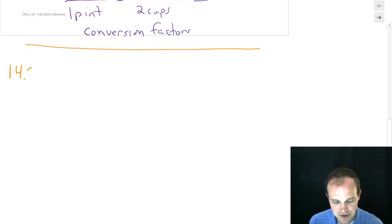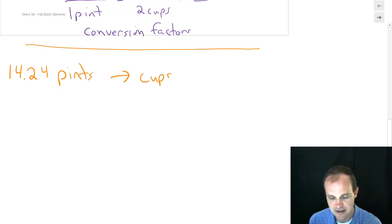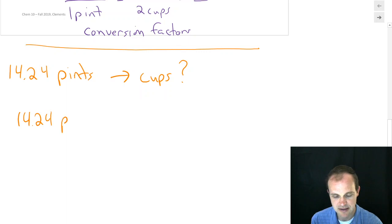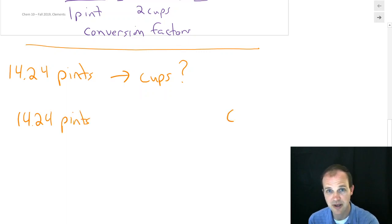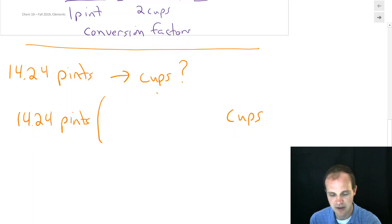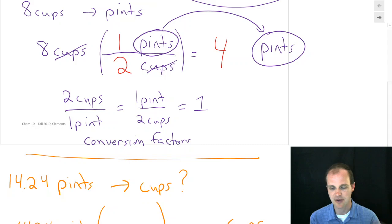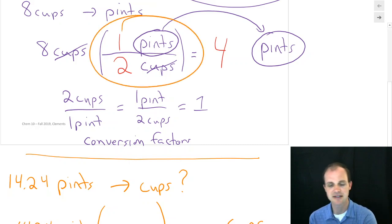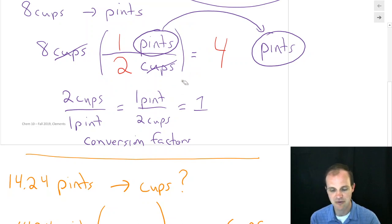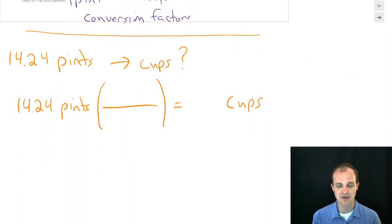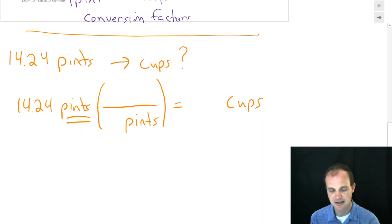Let's do the same kind of math with a more complicated fractional quantity. We have 14.24 pints and want to know how many cups. We set things up the same way: 14.24 pints on the left, cups way over on the right. We know there's going to be a conversion factor. So what units go in that conversion factor? If you try to memorize things, you might think pints goes on top and cups on the bottom — but don't do that. Don't memorize unit positions.